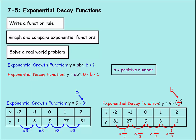Using these examples, we have an exponential growth function: y equals 9 times 3 to the x power. Here b is greater than 1, so we're multiplying by 3 every time the power goes up. So 1 becomes 3, which becomes 9, which becomes 27, which becomes 81. In the exponential decay function, on the other hand, we see that b is 1 third, which is between 0 and 1.